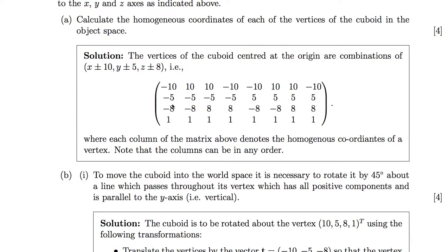We can form a matrix of vertices where each column denotes a separate one of the eight vertices, with different combinations of ±10, ±5, ±8 for x, y, and z. Note there's nothing specific about the order here — if you write down something similar but in a different order, that would be fine.